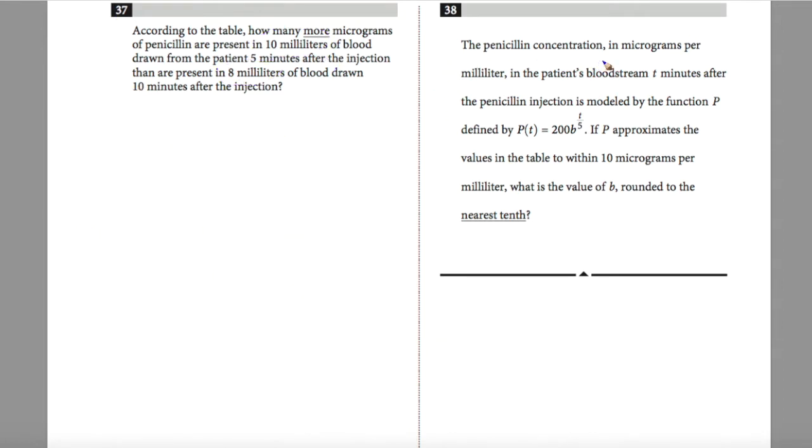Question 38, the penicillin concentration in micrograms per milliliter in the patient's bloodstream T minutes after the penicillin injection is modeled by the function P(T) equals 200B to the T over 5. If P approximates the values in the table to within 10 micrograms per milliliter, what is the value of B rounded to the nearest tenth? So I'm attempting to solve for B. I have a T within my exponent, so based upon my previous table, I have a 5 in terms of my time, and the P(T) is 152. So I'm going to plug in these values.